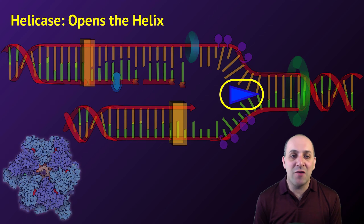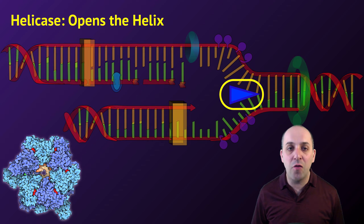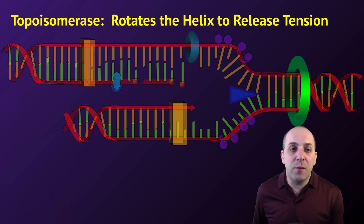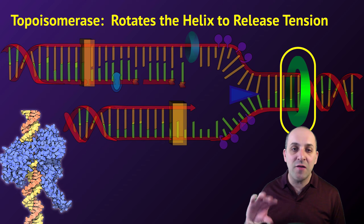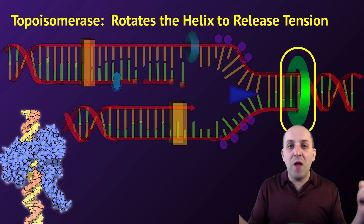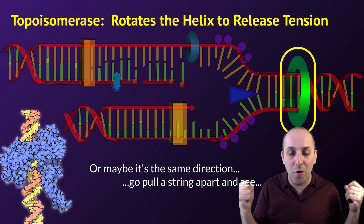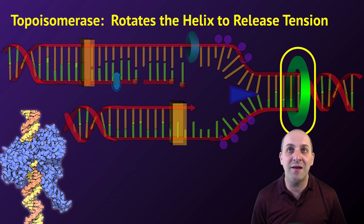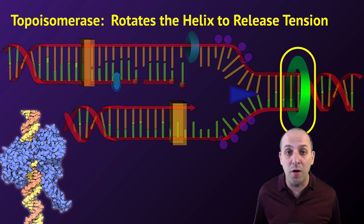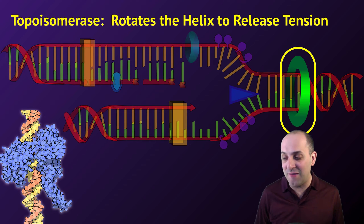Helicase is the enzyme responsible for actually opening the double helix structure to allow the rest of the replication machinery to get access to the DNA. In front of helicase, we have a molecule called topoisomerase that is constantly rotating the DNA molecule so that you don't get a buildup in tension. If you pull on the two ends of a helix without doing something to release that tension — usually by rotating the helix in the opposite direction from the direction it's being pulled apart — tension will build up. This tension is actually so great in DNA that it could cause the phosphodiester bonds that hold the nucleotides on each strand together to break apart and shatter the DNA molecule. It's topoisomerase's job to prevent that from happening.